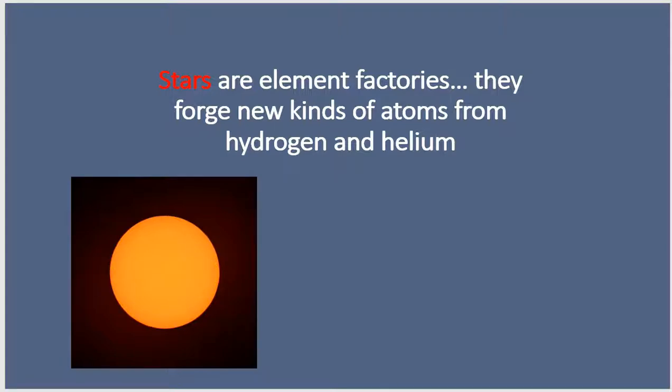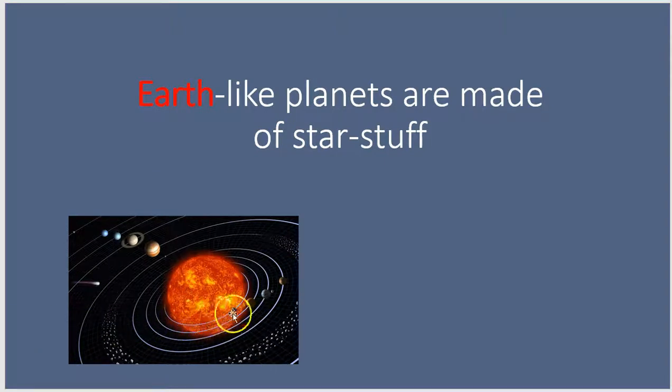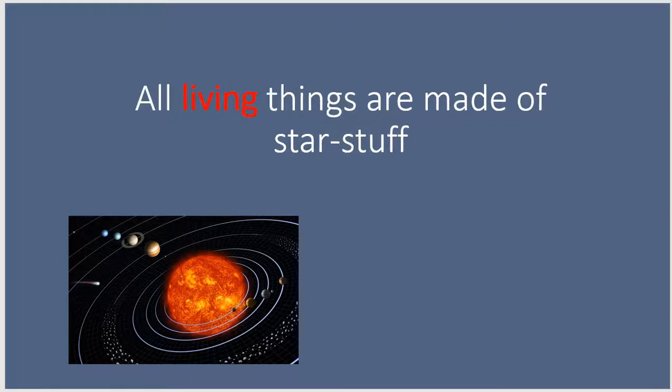As it turns out, then, the planets, the rocky planets that orbit stars like our Sun, are made from materials that previous generation stars created. And so planets are made of star stuff. And of course on Earth, life emerged on Earth, and if the planet is made of star stuff, so too are all the living things that emerged on planet Earth. They are also made ultimately of star stuff.